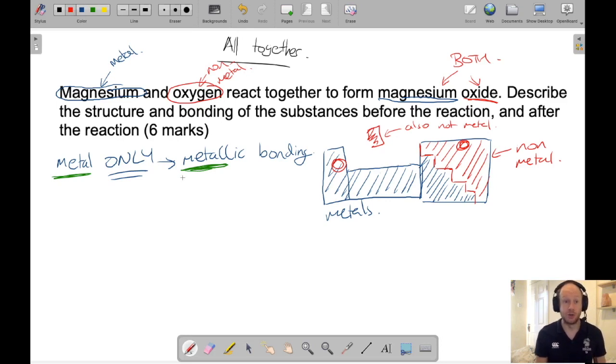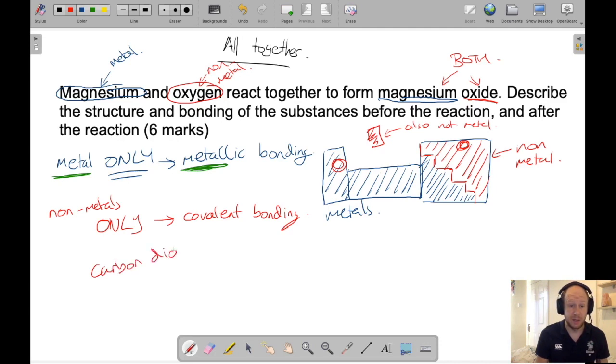Right, second of all, oxygen, nonmetal. If it's nonmetals only, then that's covalent bonding. Now that's not to say that there's only one thing there. Carbon dioxide, for example, carbon dioxide is CO2. More than one atom there. But carbon is a nonmetal, oxygen is a nonmetal. So therefore, only nonmetals, therefore this is covalent bonding.